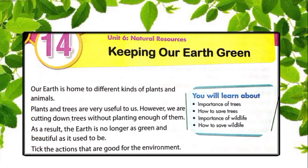If we continue to cut trees on a large scale, it will definitely affect rainfall and create an unstable atmosphere, leading to destruction of earth. When we cut down trees, we take away homes from animals and lose the ground cover, which mostly causes landslides. Without the shade of trees, the ground dries up faster and loses much of its nutrition. As we cut trees without planting enough, earth is no longer as green and beautiful as it used to be.